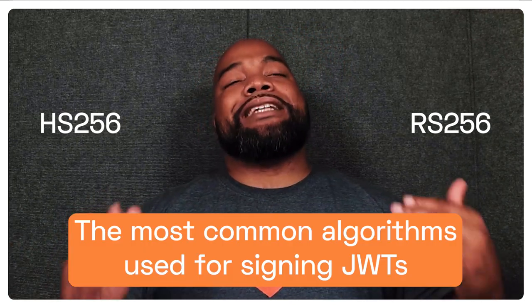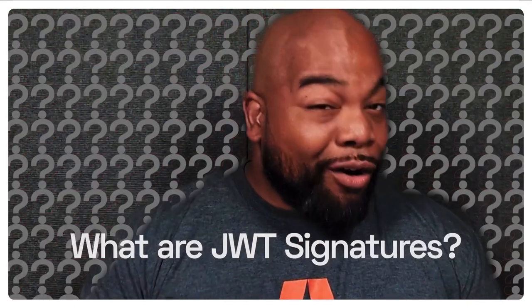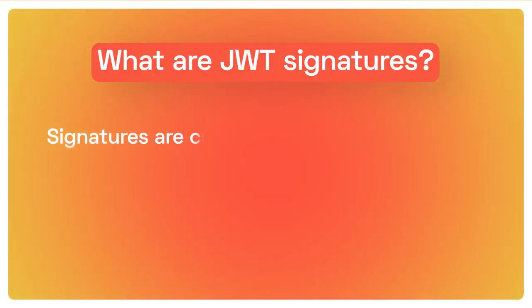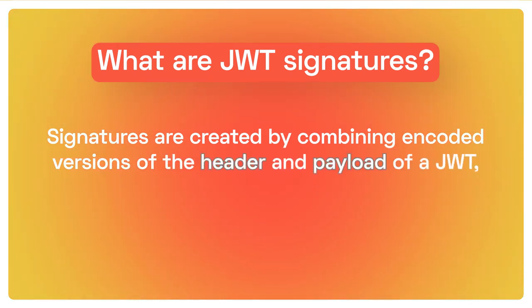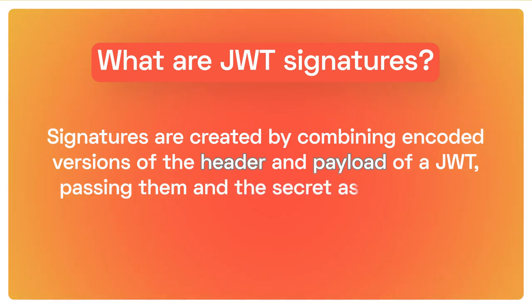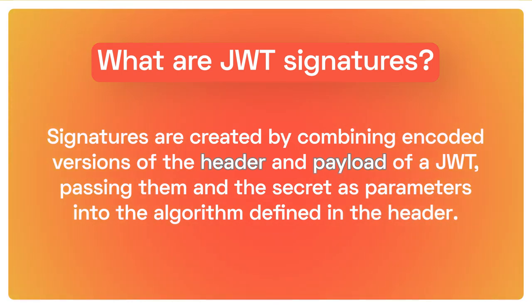RS-256 and HS-256 are the two most common algorithms used for signing JWTs. This video will go over some of the differences between RS-256 and HS-256, but it will not cover other JWT signing algorithms such as ES-256 or PS-256. But first, what are JWT signatures? Signatures are created by combining encoded versions of the header and the payload of a JWT, passing them and the secret as parameters into the algorithm defined in the header.